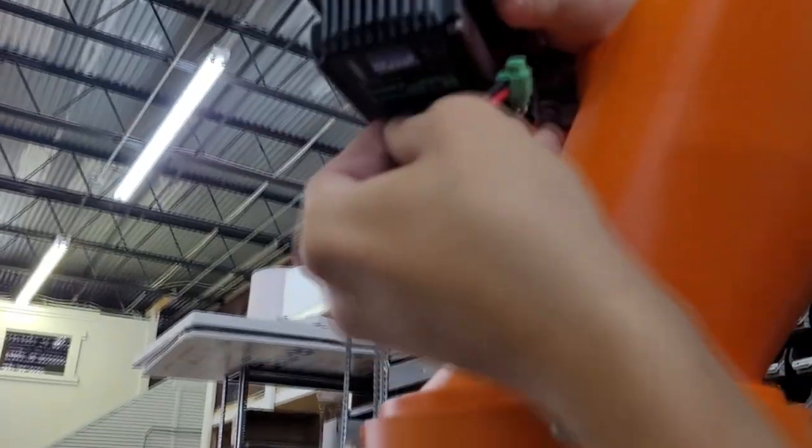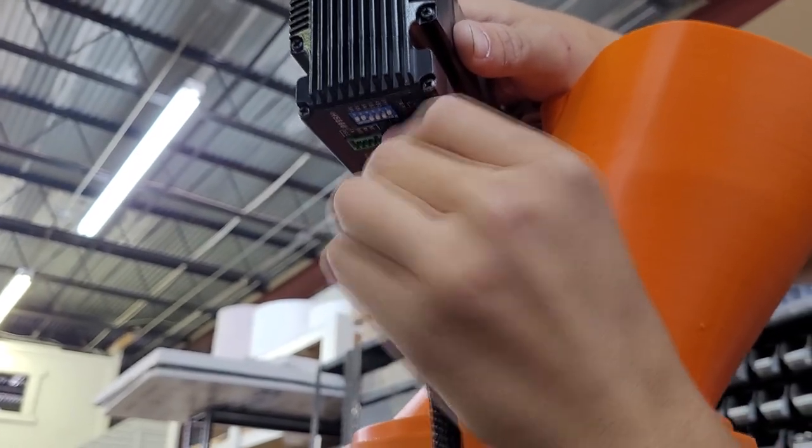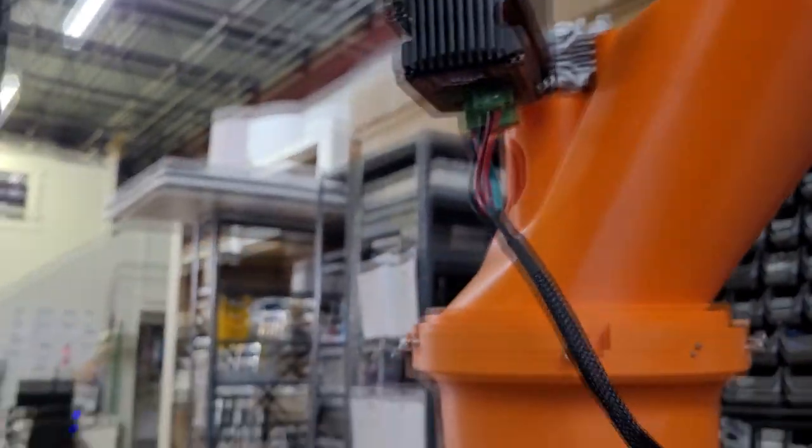The last step is to plug in the cable. The machine is now fully assembled. For tutorials on how to operate the SCARA printer, please check the links in this video's description.